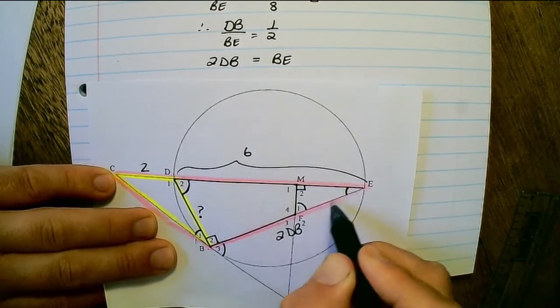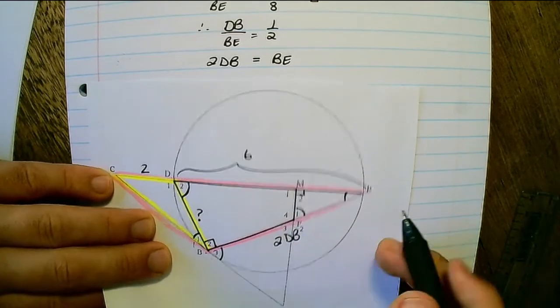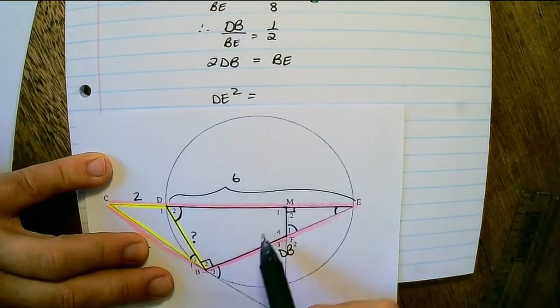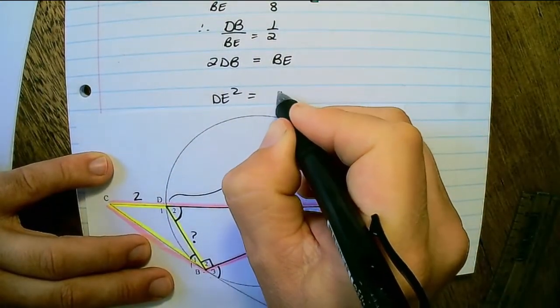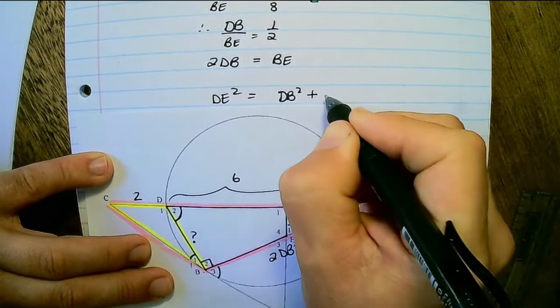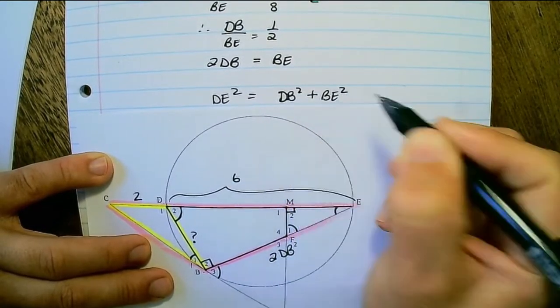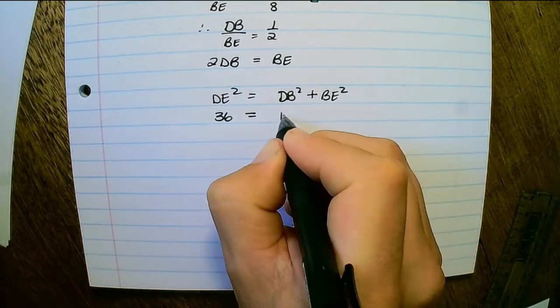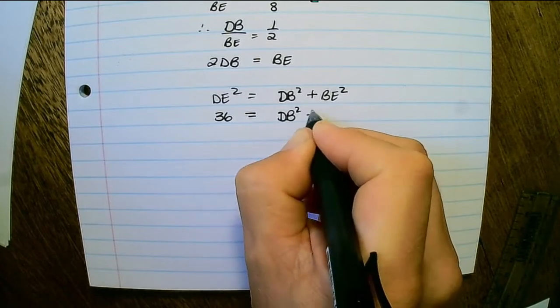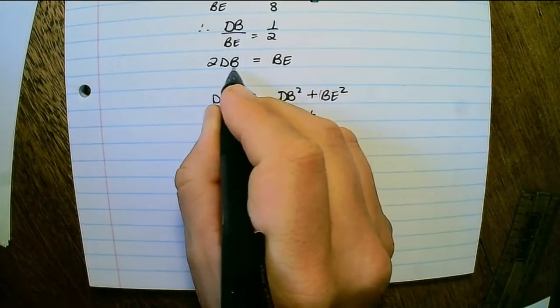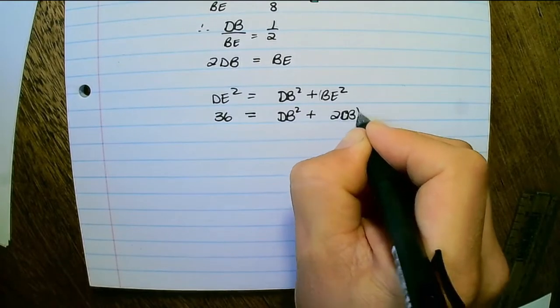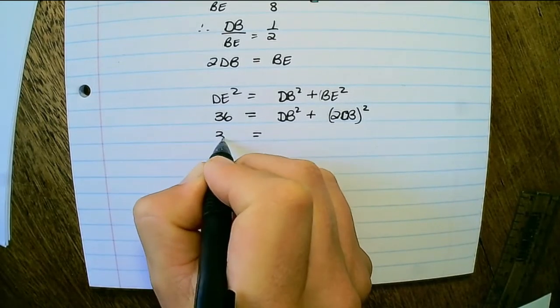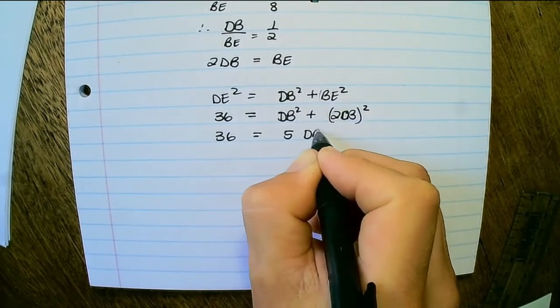So I can use Pythagoras in order to solve DB. So DE squared, which is the hypotenuse, is equal to DB squared plus BE squared. Now DE squared is 6 squared, which is 36. Then we have DB squared plus BE is 2DB, so it's (2DB) squared. So on the right-hand side, I have 5DB squared.